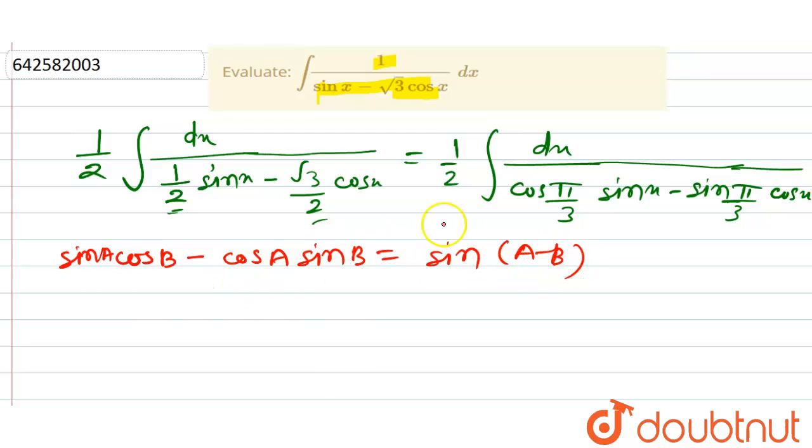So here, this is in the form of sin a into cos b minus cos a into sin b.